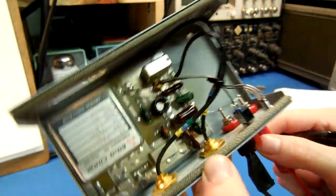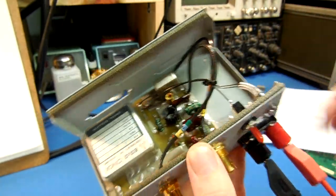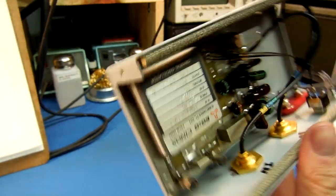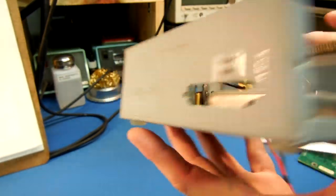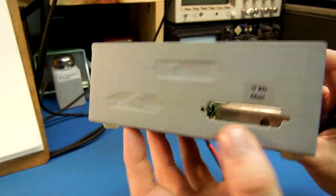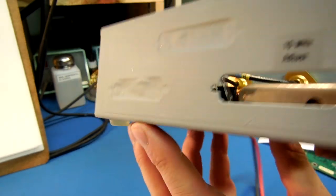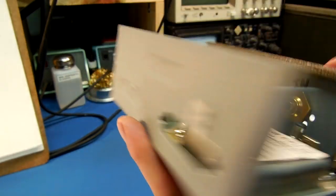And input is just two banana jacks. Switch in, LED. I left, this is in a little printer case. I left one of the ports open so you can adjust the 10 MHz filter, oscillator.